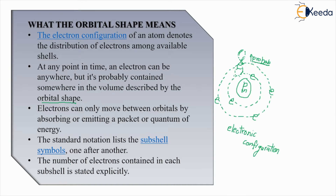Electrons can move between orbitals by absorbing and emitting packets of quantum energy. What do we mean by quantum energy packets? This is nothing but taking in or giving out energy. If you take in energy you are going to the higher orbital; if you give out energy you are coming to the lower orbital. The standard notation lists the subshell symbols one after another. Every shell also consists of subshells. The number of electrons contained in its subshells is stated explicitly.